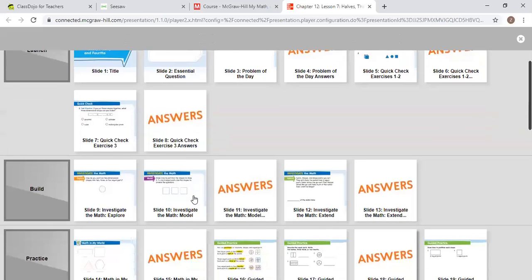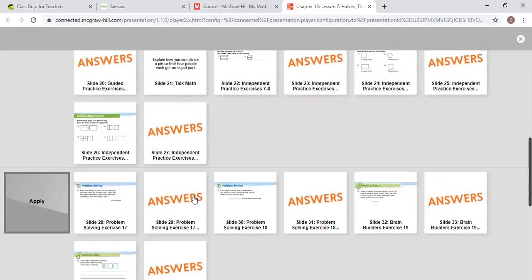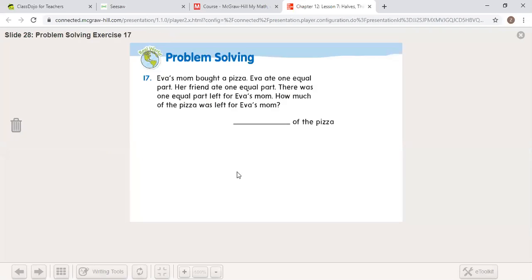Problem solving. Ava's mom bought a pizza. Ava ate one equal part. Her friend ate one equal part. And there was one left over for Ava's mom. How much of the pizza was left? Think of a circle. You get a piece, friend gets a piece, and the mom gets a piece.